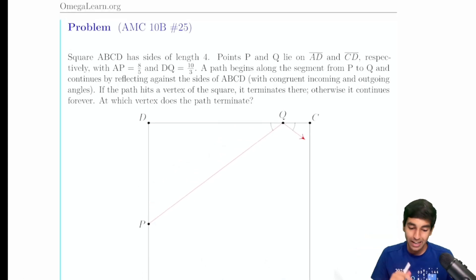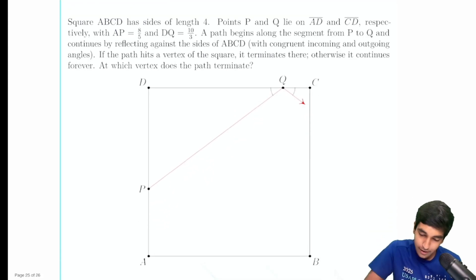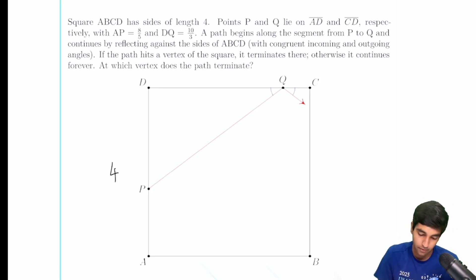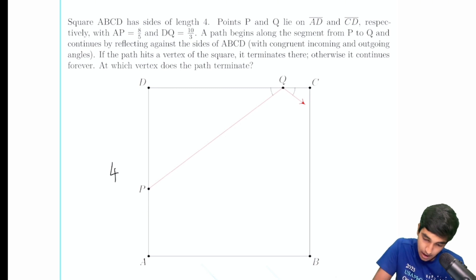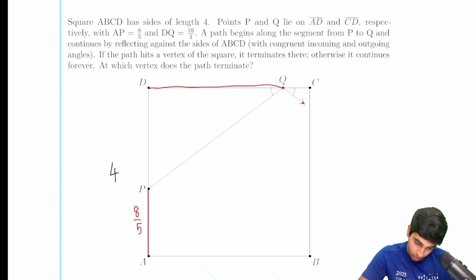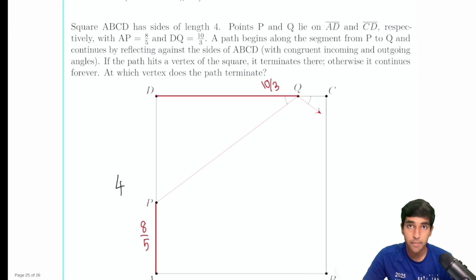Let's solve number 25 on the AMC 10B. We've got a square of side length 4, and we have points P and Q on AD and CD respectively, where AP equals 8/5 and DQ equals 10/3. A path begins on the segment from P to Q and continues.